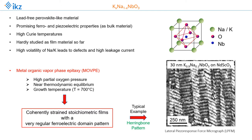In order to overcome this problem, we have performed metal-organic vapor phase epitaxy (MOVPE), which is carried out at high partial oxygen pressure close to thermodynamical equilibrium at typical growth temperatures around 700 degrees centigrade. This highly sophisticated growth technique leads to very perfect, coherently strained, stoichiometric films with a very regular ferroelectric domain pattern. As a typical example, I show on the right side a lateral PFM response force micrograph of a 30nm thin film grown on LaScO3 substrate, showing a very regular herringbone domain pattern — direct proof of the high perfectness of the thin film.